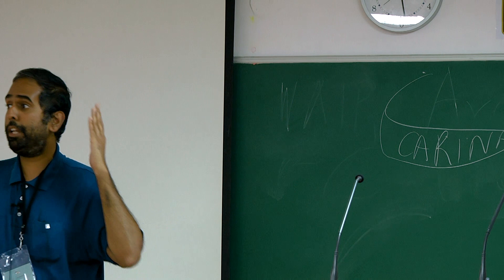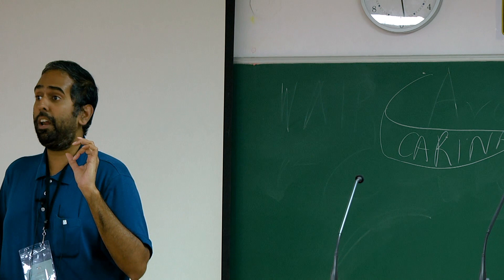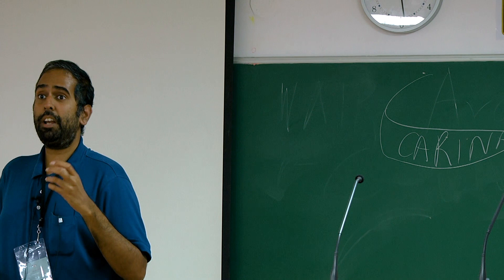Birds have evolved extremely sensitive eyes in the dark by making their eyes bigger, or increasing the sensitivity by adding more light-sensitive receptors so they can see under very dimly lit conditions.